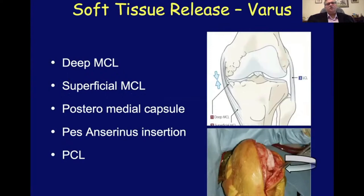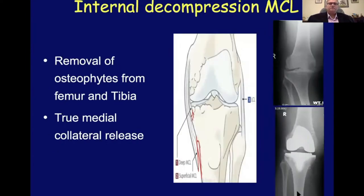On the varus side, which is most common, the deforming structures are the deep and superficial medial collateral ligament, the posteromedial capsule, the pes anserinus insertion, and — as a last resort — the PCL, which should not be touched unless absolutely necessary. Something I call the internal decompression of the medial collateral ligament — just removing osteophytes from the femur and tibia before true medial collateral release — is often adequate in trying to balance the knee, particularly now that we are thinking in terms of kinematic alignment.